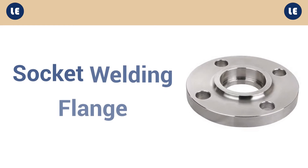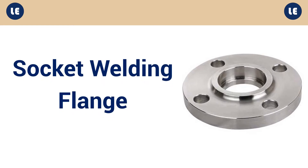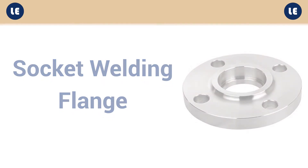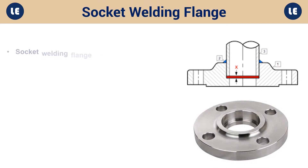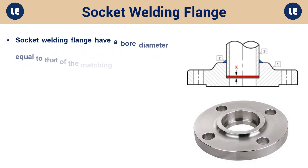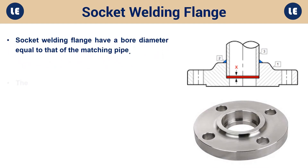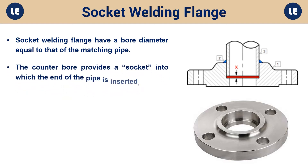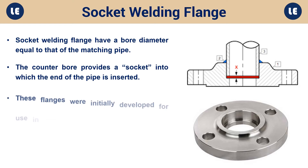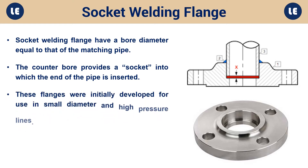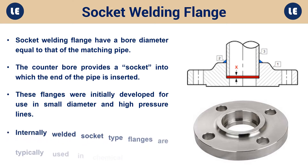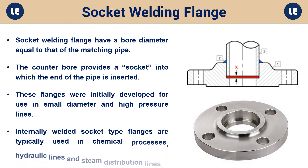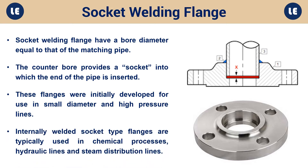Socket welding flange: Socket welding flanges have a bore diameter equal to that of the matching pipe. The counter bore provides a socket into which the end of the pipe is inserted. These flanges were initially developed for use in small diameter and high-pressure lines. Internally welded socket type flanges are typically used in chemical processes, hydraulic lines, and steam distribution lines.